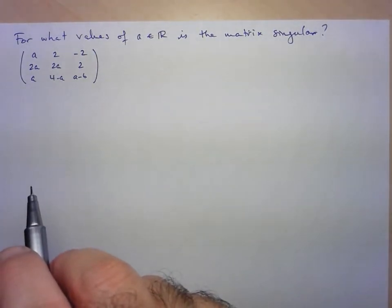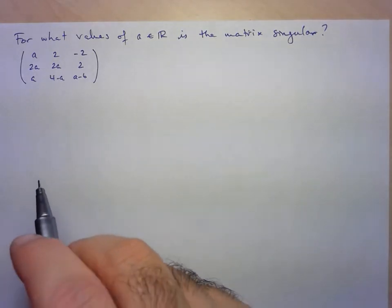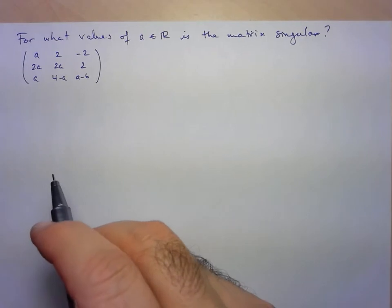We know that in order for a matrix to be singular, its determinant must be equal to zero. That's going to allow us to set up an equation here.